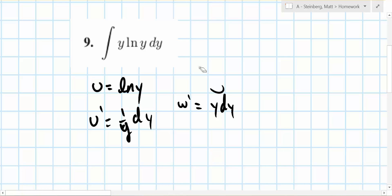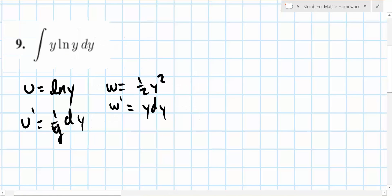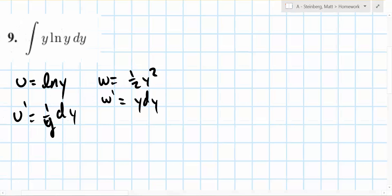So y dy and that would make w equal to 1 half y squared. So now if we do this out, this will be equal to u times w which is ln y times 1 half times y squared.